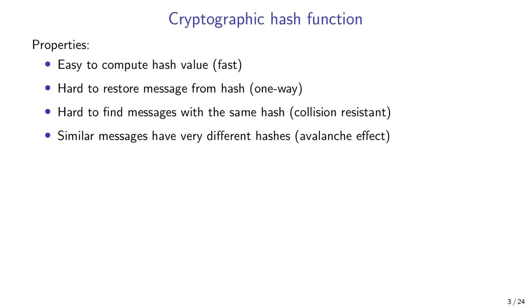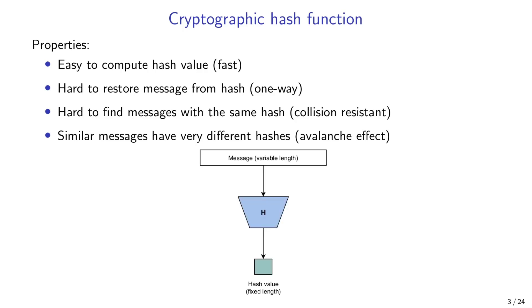And finally, similar messages should have very different hashes — the so-called avalanche effect. So if we hash a gigabyte of data and then rehash it changing just a single bit, the output should be completely different. On average, half of the bits will flip in the hash output. Basically, a single bit change in the input re-randomizes the output, meaning it does not contain information about the input. This property is needed for one-wayness.